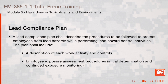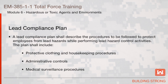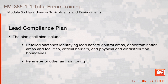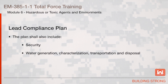A lead compliance plan shall describe the procedures to be followed to protect employees from lead hazards while performing lead hazard control activities. The plan shall include a description of each work activity and controls, employee exposure assessment procedures including an initial determination and continued exposure monitoring, protective clothing and housekeeping procedures, administrative controls, and medical surveillance procedures. The plan shall also include detailed sketches identifying lead hazard control areas, decontamination areas and facilities, critical barriers, physical and air distribution boundaries, perimeter or other air monitoring, security, and water generation, characterization, transportation, and disposal.